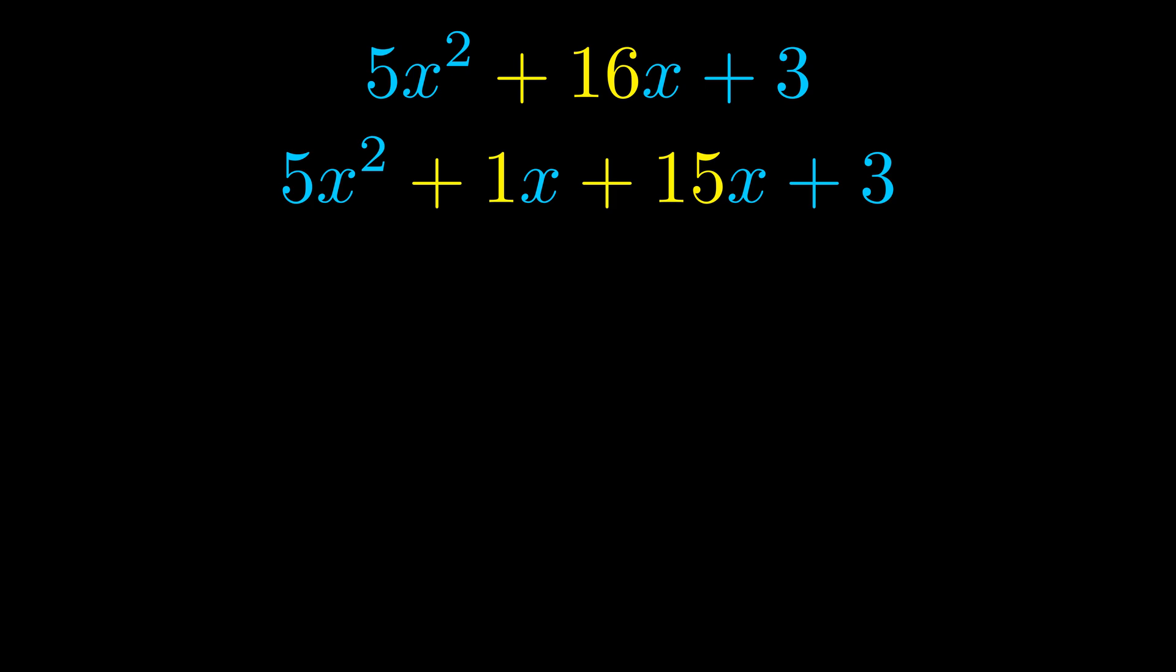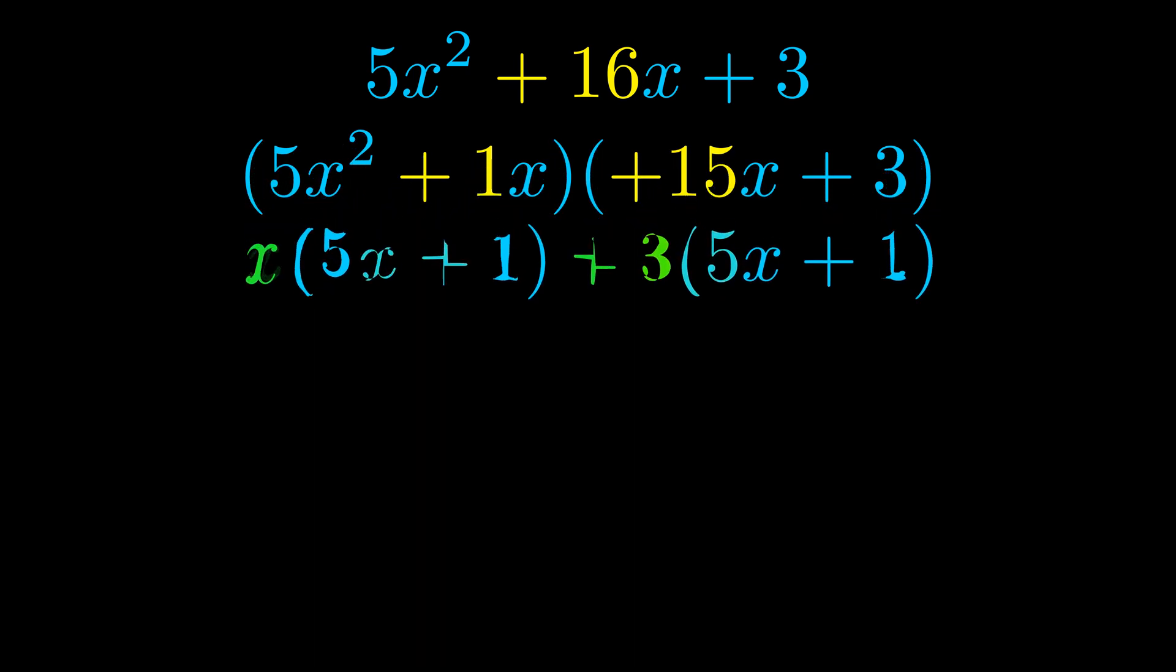Once we've done this we go ahead and put parentheses around the first term and the last term. And we do that so that we can take the greatest common factor out of both terms. We can see the greatest common factor is now outside in green.